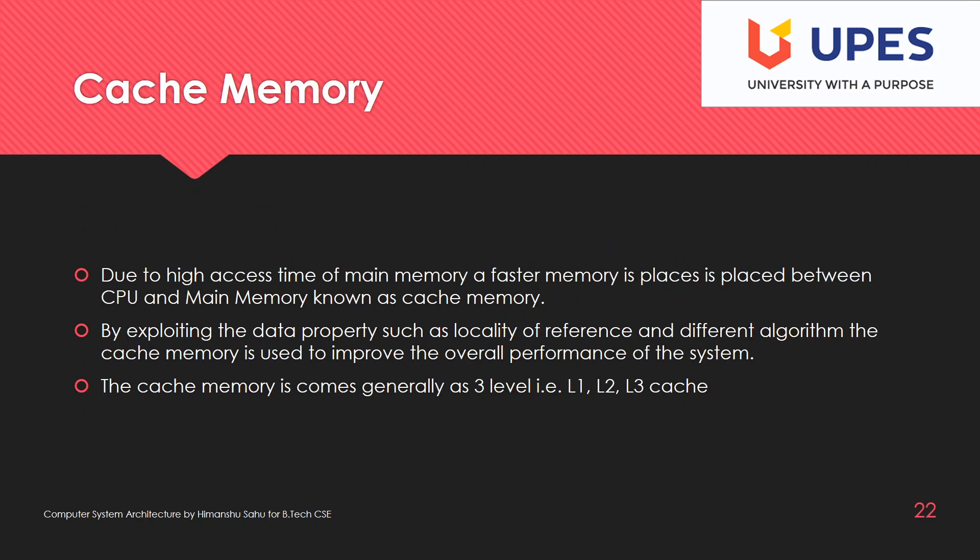Cache memory is devised due to the high access time of main memory. Because of the high access time of main memory, a faster memory is placed between the CPU and the main memory, which is known as the cache memory.